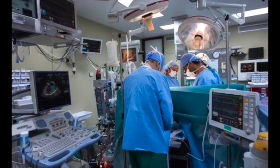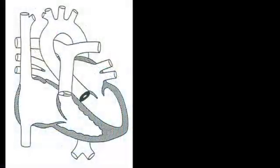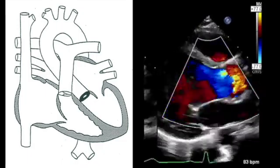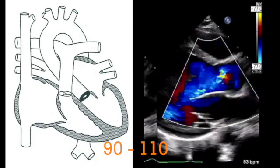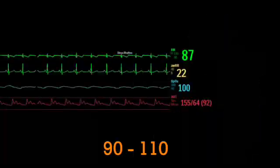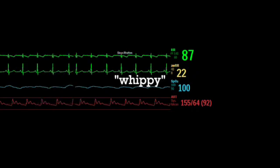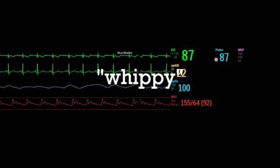It's Monday night, and you're the bedside nurse assigned to a 15-year-old that had a Ross procedure earlier today for a bad aortic valve. Systolic blood pressure parameters in the order say 90 to 110, but this is your monitor. So you call the doctor, and they say the arterial line is whippy. We're not going to treat that. And here's your cuff pressure. So what's going on?